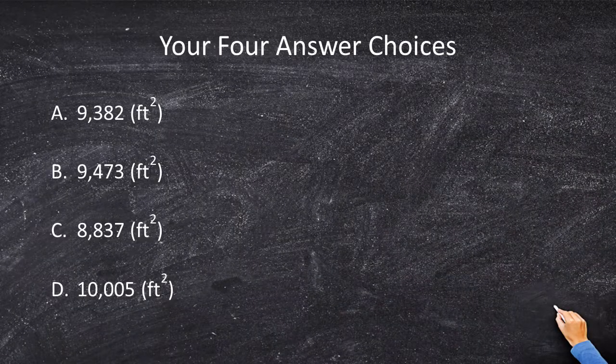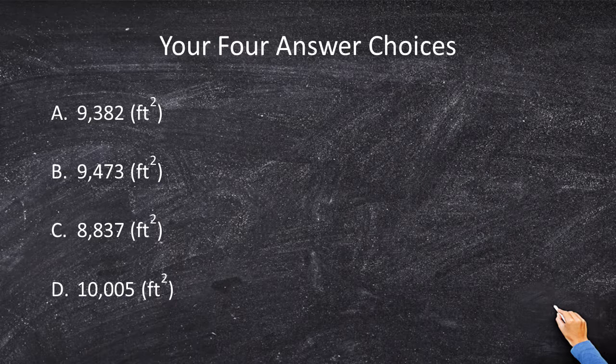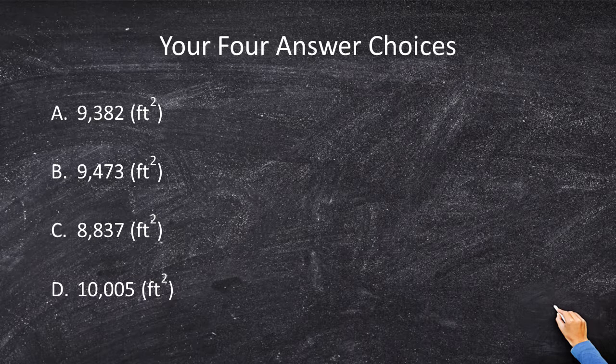We have four answer choices, but unfortunately all of these are going to be a guess, except for one thing. Now, what is the area of this rectangle? 50 times 200. Let's do that. Well, 50 times 200 is 10,000. And if you know that you are subtracting the area of the two semicircles, you can eliminate answer choice D. So we know that the area cannot be above 10,000. So answer choice D is eliminated.